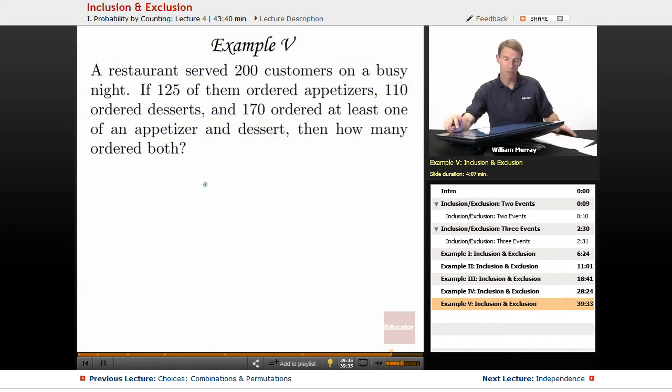So, in our final example here, we're going out to a busy restaurant. They're serving 200 customers that night, and we're looking at it from the restaurant's point of view. 125 of their customers ordered appetizers, 110 ordered desserts, and 170 of those customers ordered at least one of an appetizer and or a dessert.